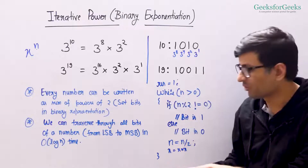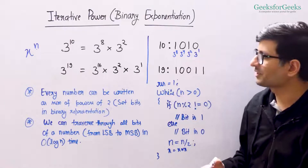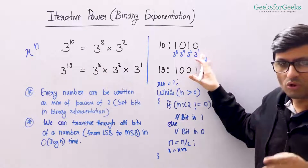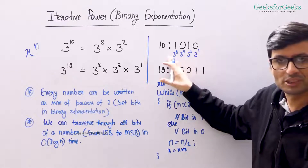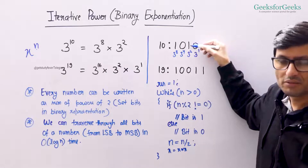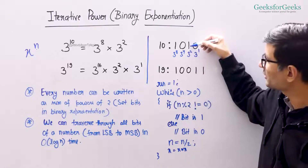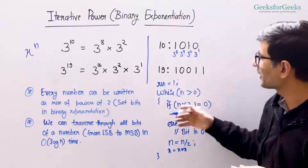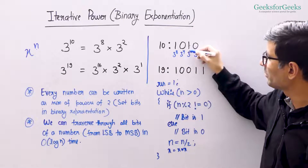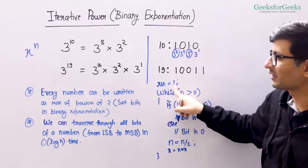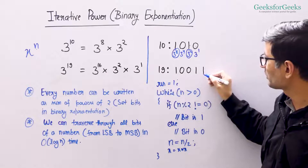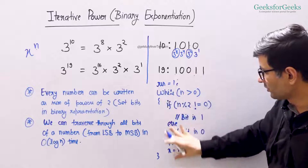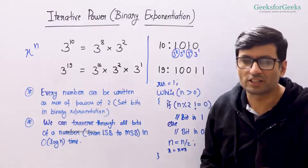Now you have enough of the idea. Please pause this video and try to write down the complete function to compute the power. This function takes two parameters, x and n, and uses this logic: traverse through all bits in the binary representation from LSB to MSB; if the bit is 1, multiply the result by x raised to the power corresponding to that bit position; if the bit is 0, ignore it. After all the multiplications, you will have the correct result.